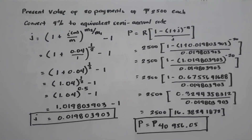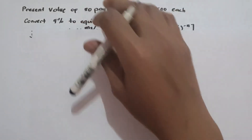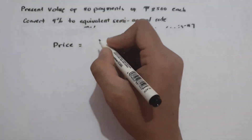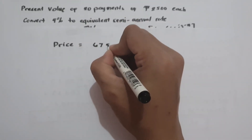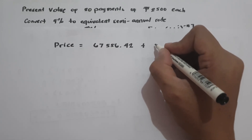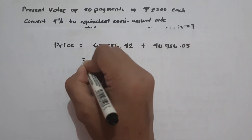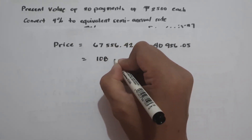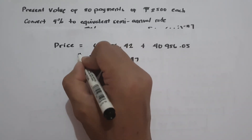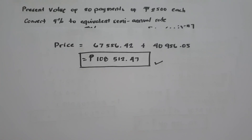Finally, to compute the price of this bond, we add the present value of 100,000 and the present value of the 20 payments of 2,500 each: Price = 67,556.42 + 40,956.05 = 108,512.47 pesos. That is our answer. I hope you've learned from this video. Thank you so much for watching, and God bless us all.